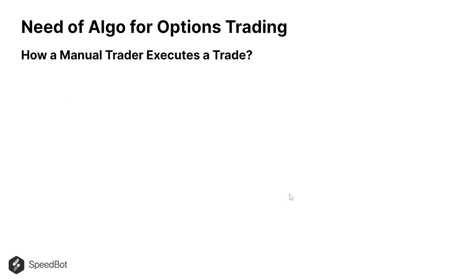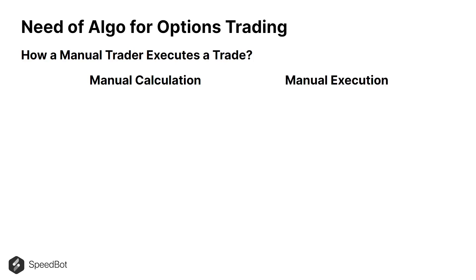Let's understand how a manual trader executes a trade. Assume that the manual trader already has an option trading strategy — it could be a call buy or a put sell. Let's look at how a manual trader currently executes a trade. To execute the trade, he or she needs to calculate several things manually, and then execute the trade manually.